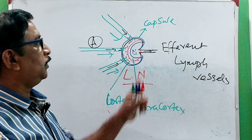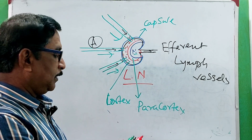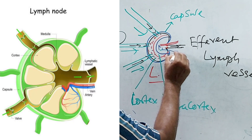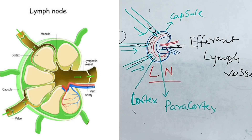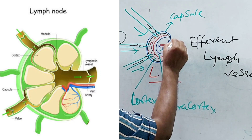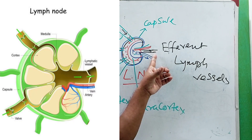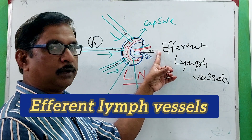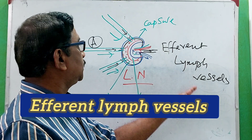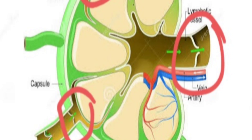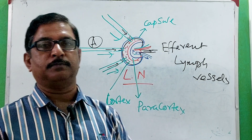Through the hilum, not only the efferent lymphatic vessel passes — blood vessels also pass through the hilum. The artery enters into the lymph node through the hilum, and veins leave through the hilum. Nerves also enter into the lymph node through the hilum. So if asked what structures pass through the hilum of a lymph node, the answer is: efferent lymph vessels (one or sometimes two), artery entering, vein leaving, and nerve entering — four structures in total.